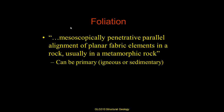A related term is foliation, which is the mesoscopically penetrative parallel alignment of planar fabric elements in a rock, usually a metamorphic rock. You can also have primary foliation, which is igneous or sedimentary layering. Mesoscopic means not microscopic — more hand-sample to outcrop scale — and not macroscopic, not kilometer scale. Penetrative means it goes through the rock everywhere. Planar is the key word: foliation, think of foliage or leaves, that's the root of the word.